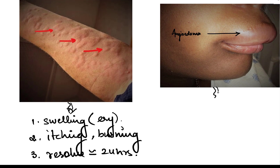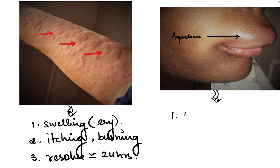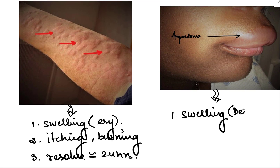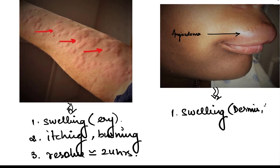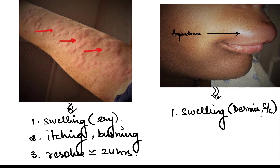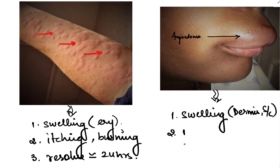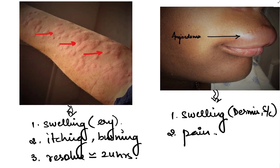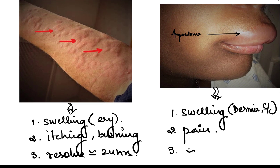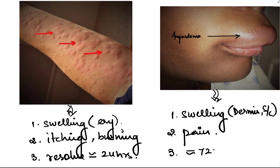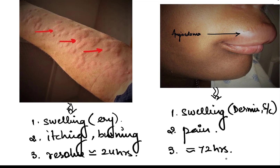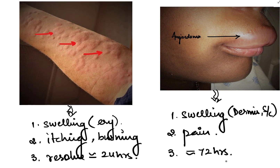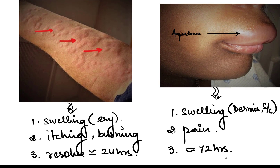Angioedema is again a swelling, but the swelling is deep — up to the level of dermis or subcutis. This is deep swelling and instead of itching, it is commonly associated with pain. They take around 72 hours to resolve, while wheals resolve within 24 hours.